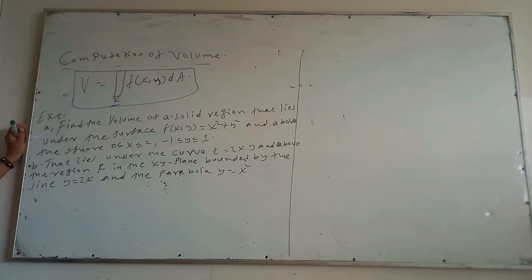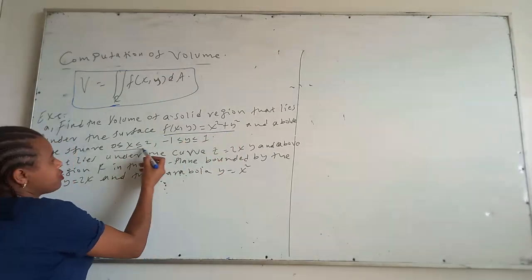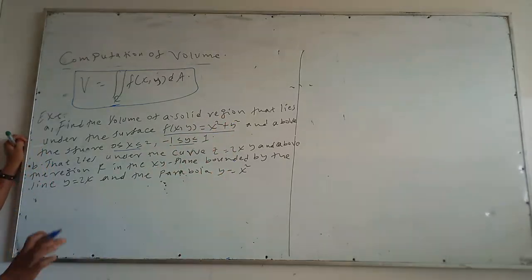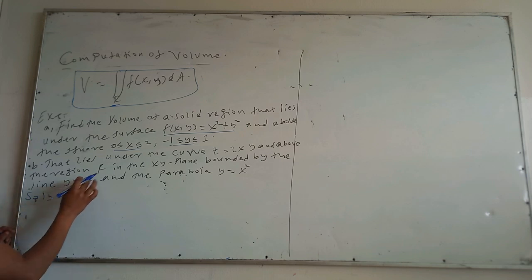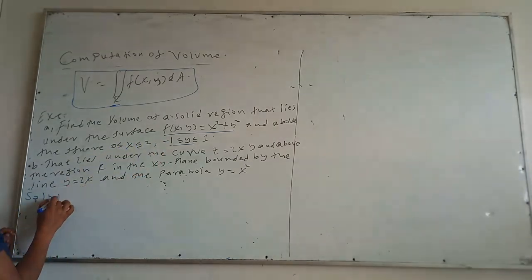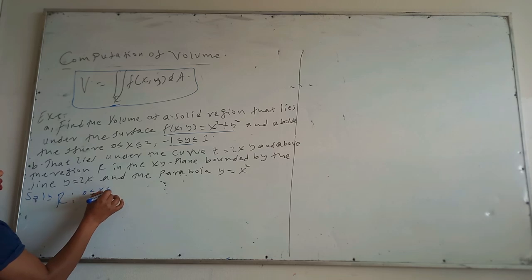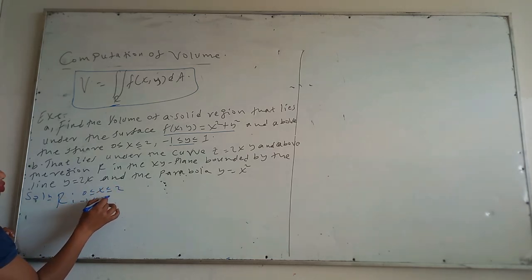Example: Find the volume of a solid region that lies under the surface and above the square. The region R is given with x from 0 to 2, and y from -1 to 1.